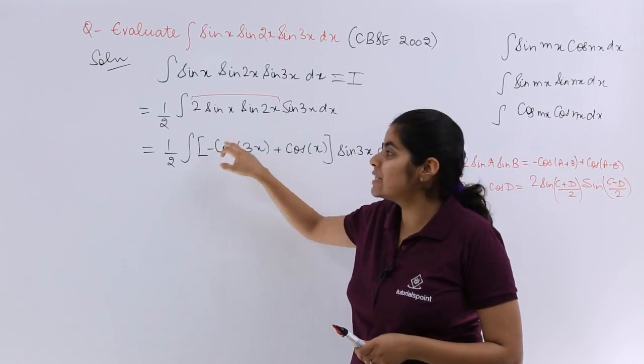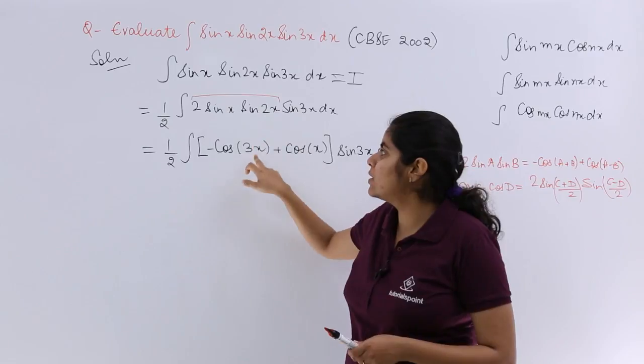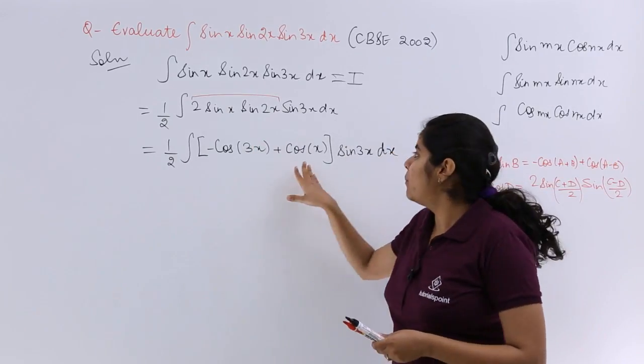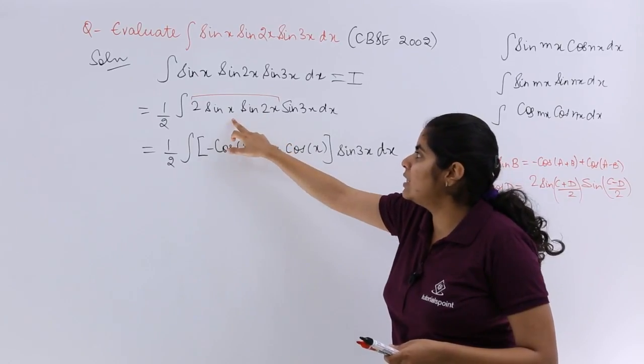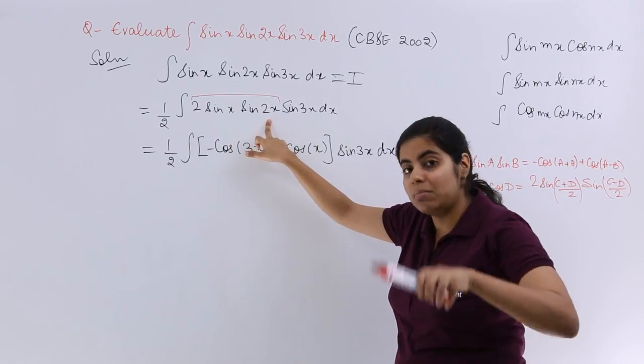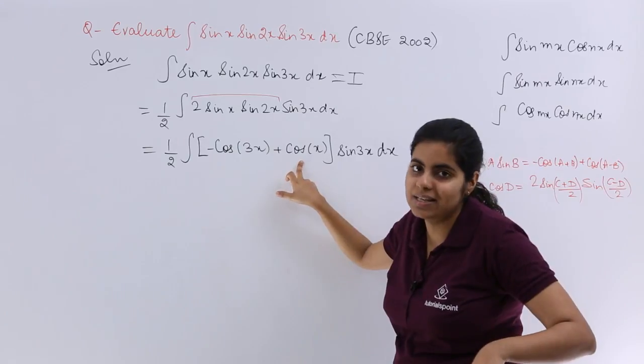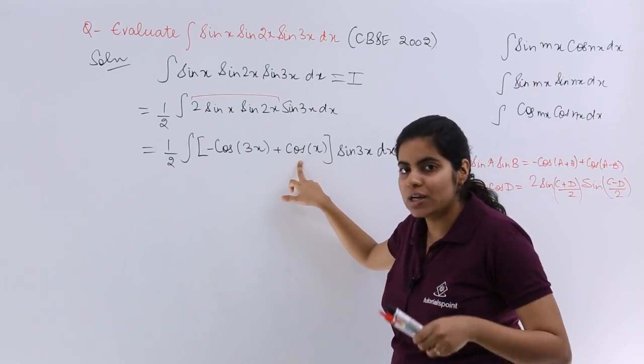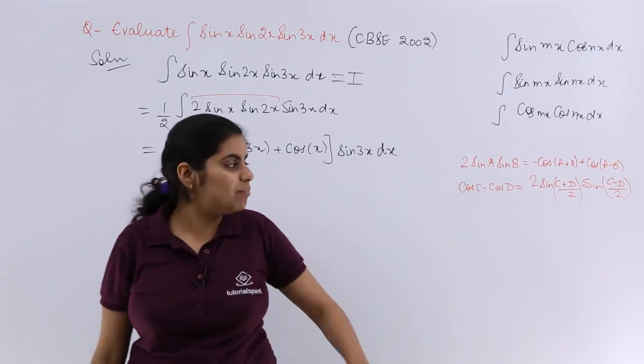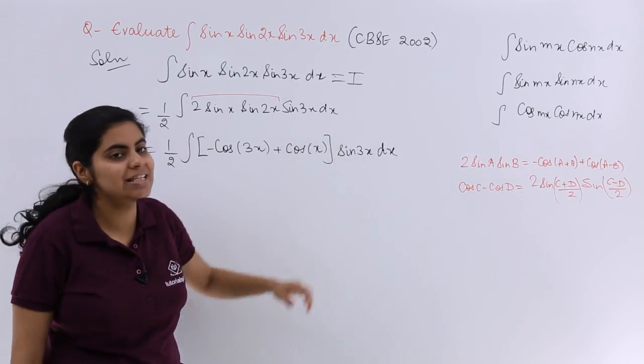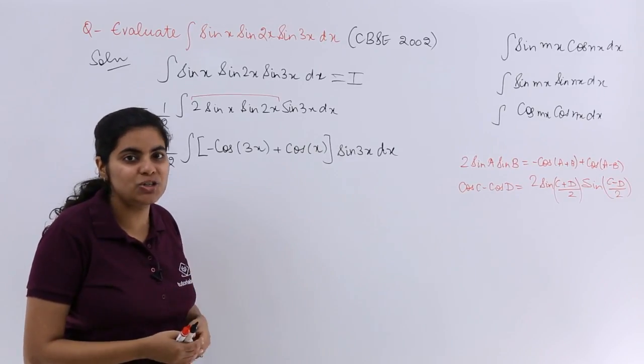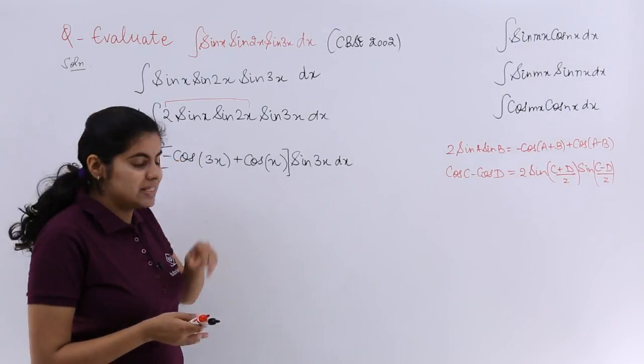It is minus cos(a plus b) plus cos(a minus b). So minus cos(a plus b) means x plus 2x that is 3x, plus cos(a minus b) means x minus 2x which is minus x. So cos(minus x), but what is cos of minus theta? It is nothing but cos theta, so it is nothing but cos x sin 3x as it is. This step ends up here.